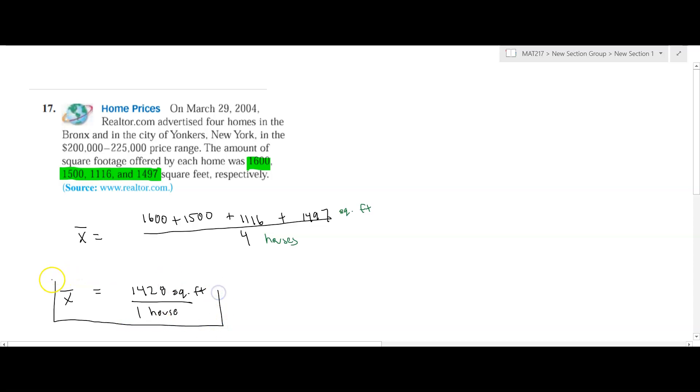Now, we're going to need that in order to get the sample standard deviation. So right now, what we do know is that on a number line, if I think about my center value, my central value as being right here, 1,428, then we see that some of the houses are below, some of them are above in the square footage.